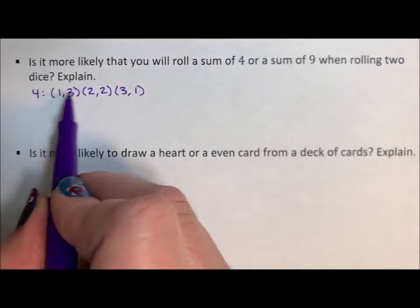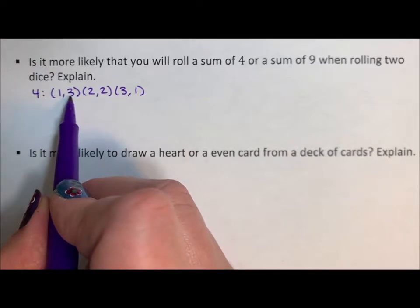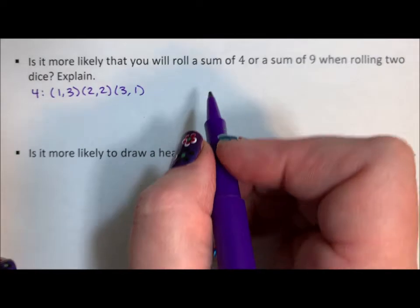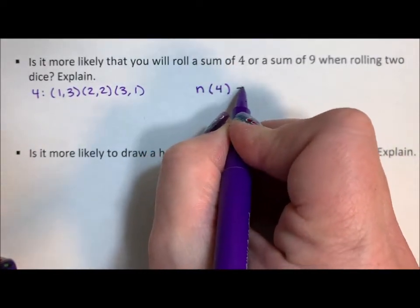Now one and three and three and one are two different rolls. If I had a red die and a white die, the red die could be a one with the white being three, or the red could be a three with the white being one. So these are two different rolls. So the number of elements for rolling a four is three.